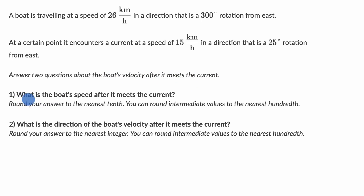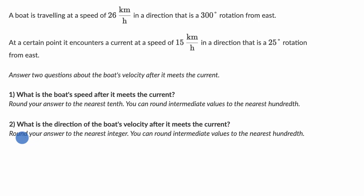The first question is: what is the boat's speed after it meets the current? Round your answer to the nearest tenth. You can round intermediate values to the nearest hundredth. And what is the direction of the boat's velocity after it meets the current? Round your answer to the nearest integer, and you can round intermediate values to the nearest hundredth. Pause this video and see if you can work through this.